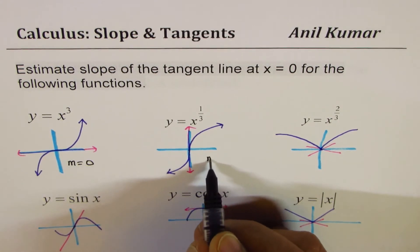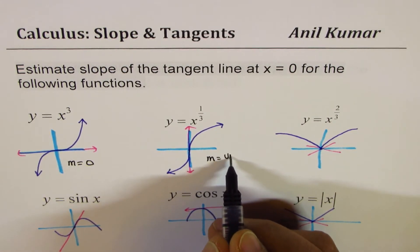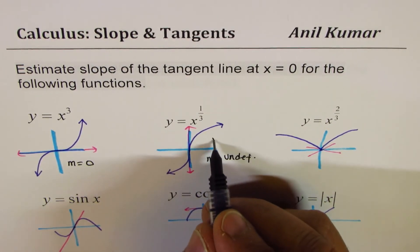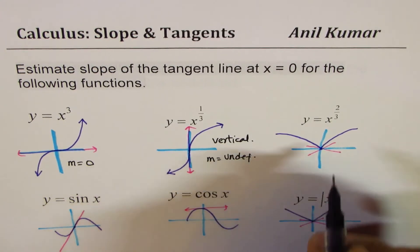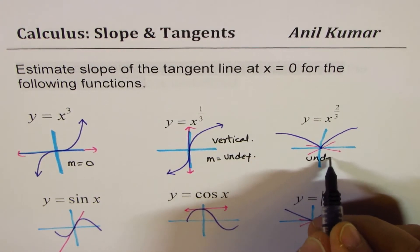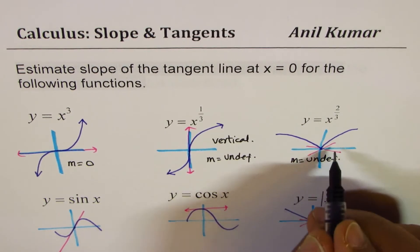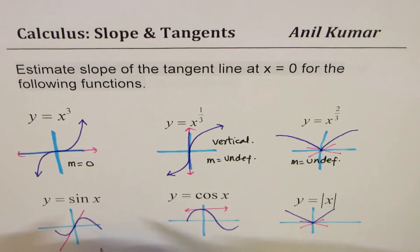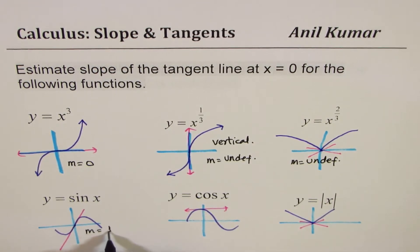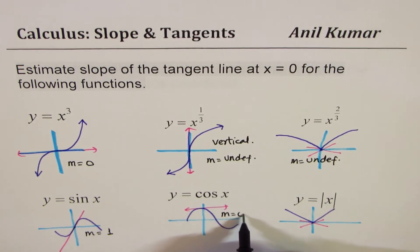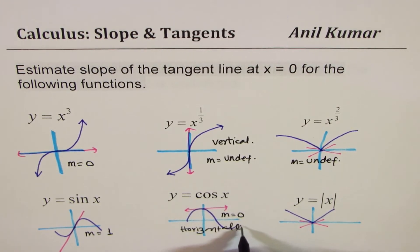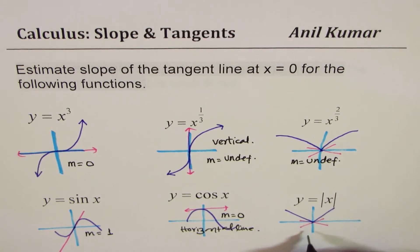You can pause the video, answer, then check my solutions. The tangent lines are as follows: for x-cubed at zero, slope m equals zero. For x to the power of 1/3, slope m is undefined because it's a vertical line. For x to the power of 2/3, slope is again undefined since there are many possible tangents at the cusp. For sine x, slope m appears to be one. For cosine x, slope m is zero since it is a horizontal line. For the absolute function, slope is undefined.